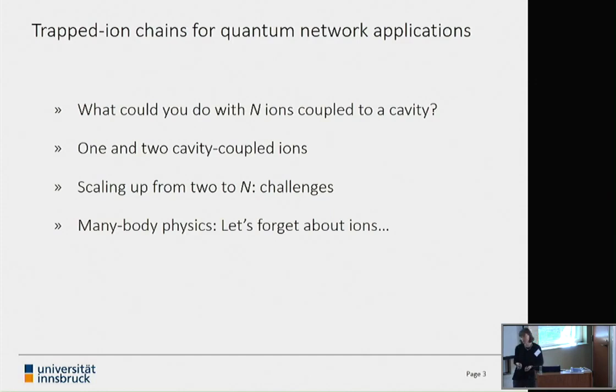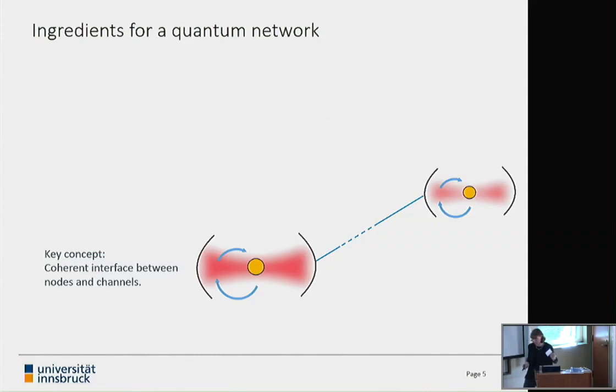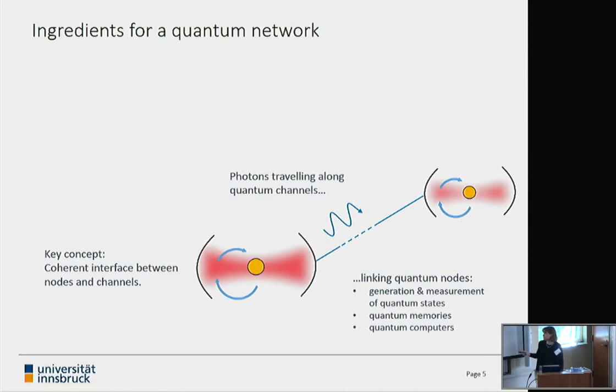Towards the end, I want to forget about ions and point out some ways that maybe we can do many-body physics experiments in these ion traps with nanoparticles, with these silica beads that are about 100 nanometer size, mesoscopic particles in ion traps. What could you do if you had several ions coupled to a cavity? Here I want to focus on ions that are individually addressable, and particularly on network applications. What would we want for a quantum network? The key idea is we would like to have some kind of coherent interface between quantum nodes, where we're storing information, and quantum channels, where we have photons traveling between these nodes.